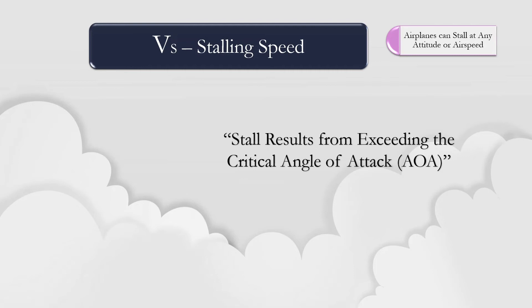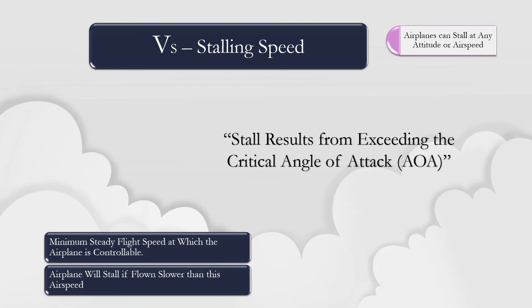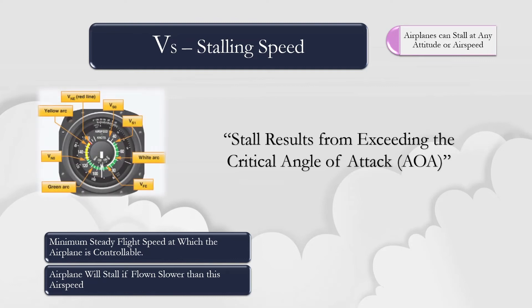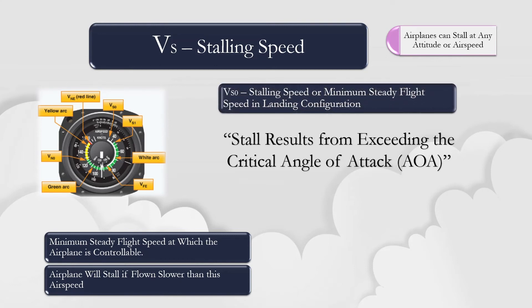Stalls occur from a rapid loss of lift when the critical angle of attack is exceeded. Angle of attack is defined as the angle between the chord line of the airfoil and the direction of the relative wind. The VS speed is the minimum steady flight speed at which the aircraft is controllable. An airplane will stall if flown slower than the VS speed. VS can be thought of as the point at which the aircraft is at the critical angle of attack in straight-and-level flight.